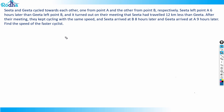Look at this problem — it's a good problem involving some important concepts, so learning those concepts is more important than just solving it. The question says that Sita and Gita cycle towards each other, one from point A and another from point B respectively. Sita left point A six hours later than Gita left point B, and at their meeting, Sita had traveled 12 kilometers less than Gita.